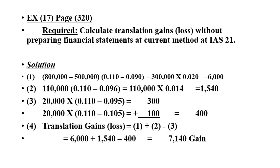Exercise 16, page 320. Required: calculate translation gains or loss without preparing a financial statement — current method — at International Accounting Standard number 21. Solution: step one — total assets minus total liabilities times the current rate minus historical rate. Total assets 800,000 minus 500,000. Current rate at December 31: 0.110, minus historical rate at January 1st: 0.090. Result: 300,000 times 0.020 equals 6,000.